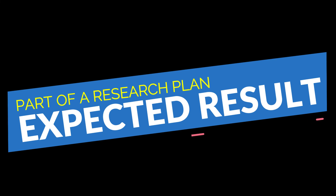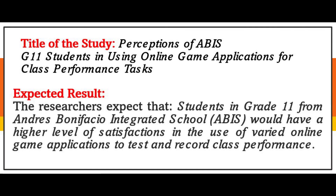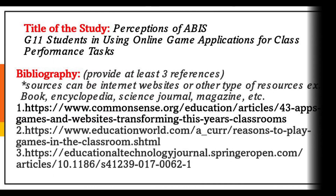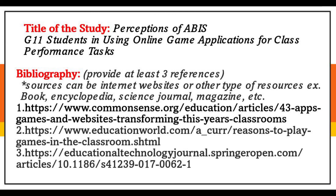The second to last part of the research plan is the expected result. You have to include your target outcome — what do you want to achieve in conducting this research study? Specify it in this part. And the last part is the bibliography. Always remember to cite and list the references you have utilized in the conduct of your study. This part shows where you took your data other than from your respondents or sample size. And those are the parts of the research plan.